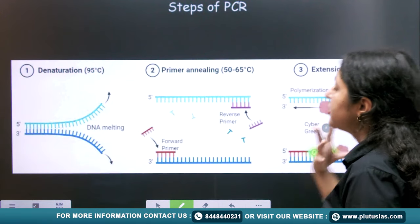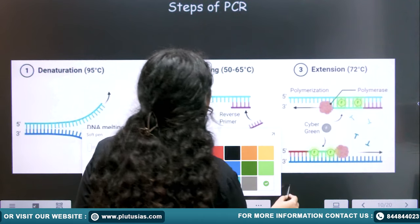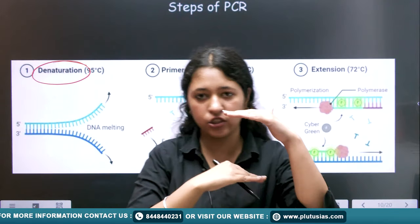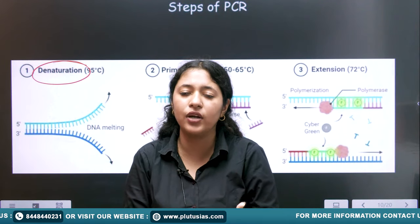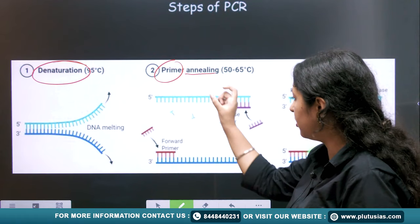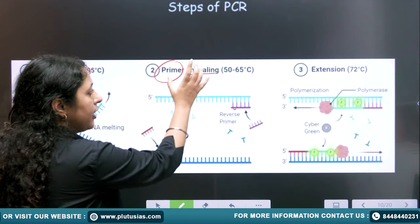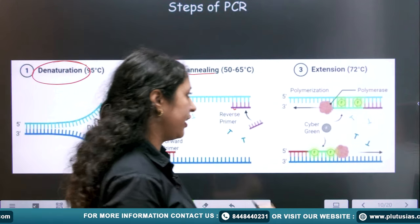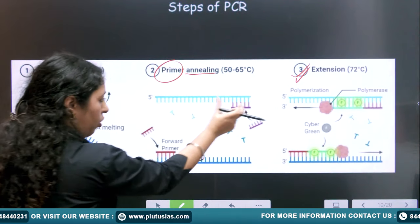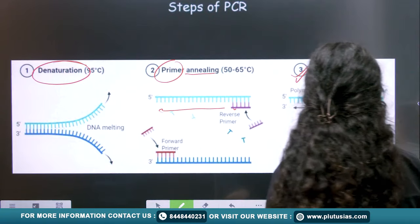Now let's understand the steps of PCR — there are three steps. The first step is denaturation, in which the two strands of DNA get separated. The second is primer annealing, where the primers come and bind to the DNA strands — forward primer and reverse primer. The third step is extension, where the primer extends and forms newly synthesized DNA.